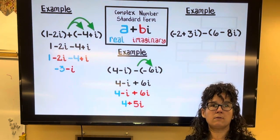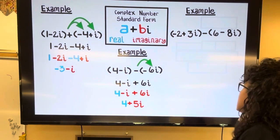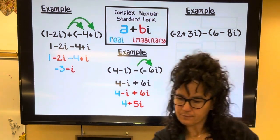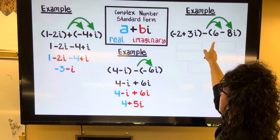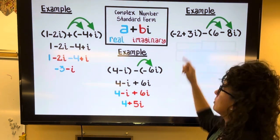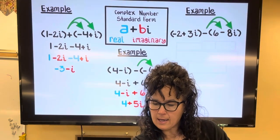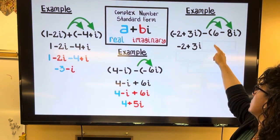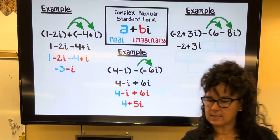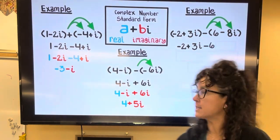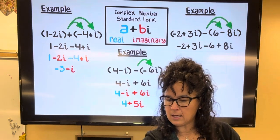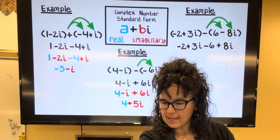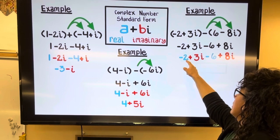Okay, last example. This one here, the negative, it needs to get distributed through. So let's bring down the -2 + 3i, and then distribute the negative through. So negative times positive 6 is minus 6, and then negative negative 8i, that's going to be plus 8i. Then I'm going to highlight this. Here are our numbers, our real pieces. Here are complex imaginary.